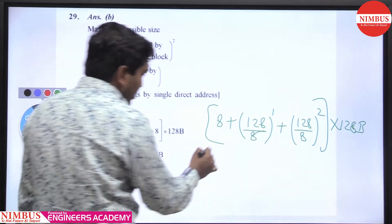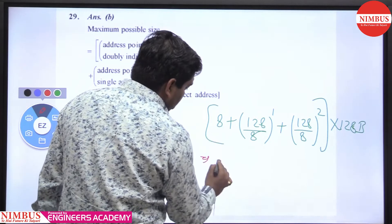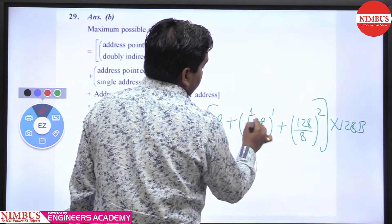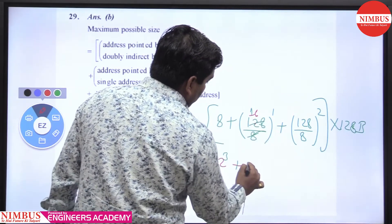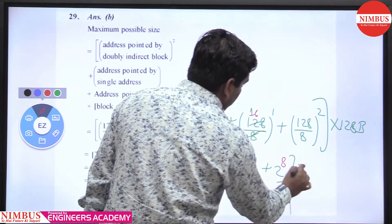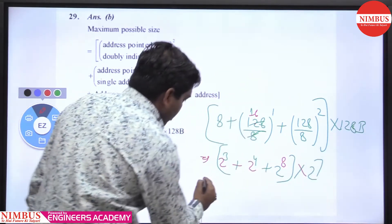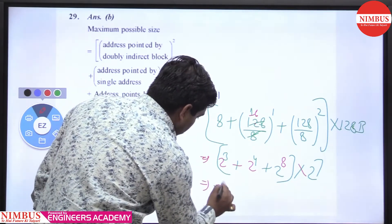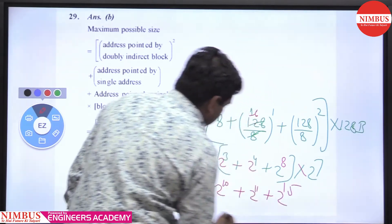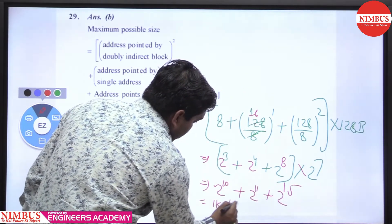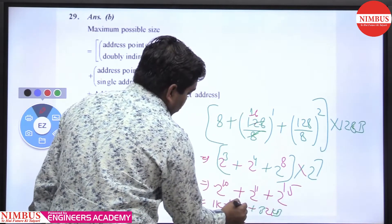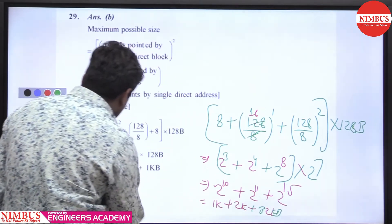With block size 128 bytes, we can write: 8 × 2³ plus single indirect giving 2⁴, plus doubly indirect giving 2⁴ squared times 2⁷, which equals 2¹⁰. So the total is 2³ plus 2⁴ plus 2⁸ into 2⁷, simplifying to 1 KB plus 2 KB plus 32 KB, giving 35 KB as the answer.